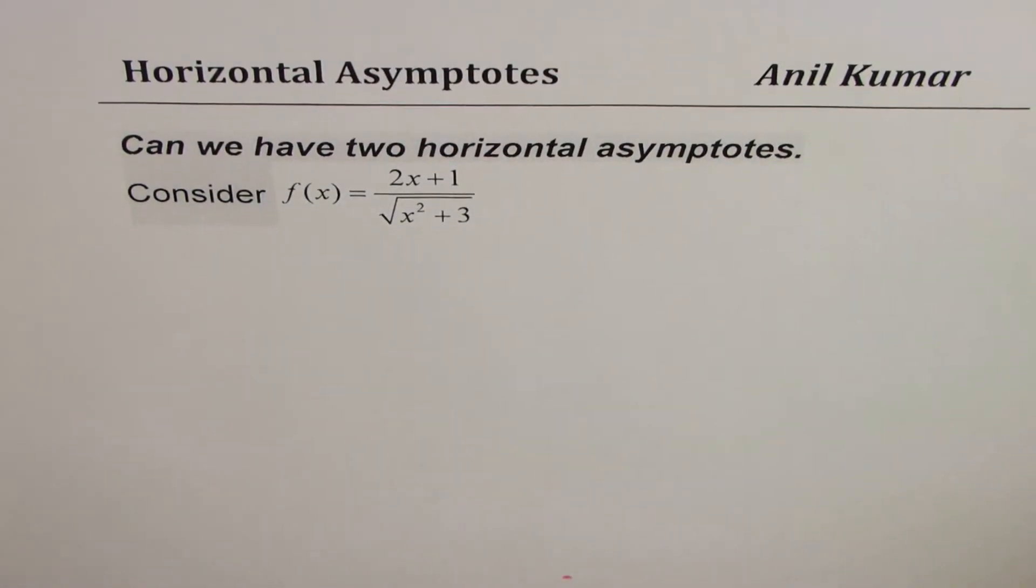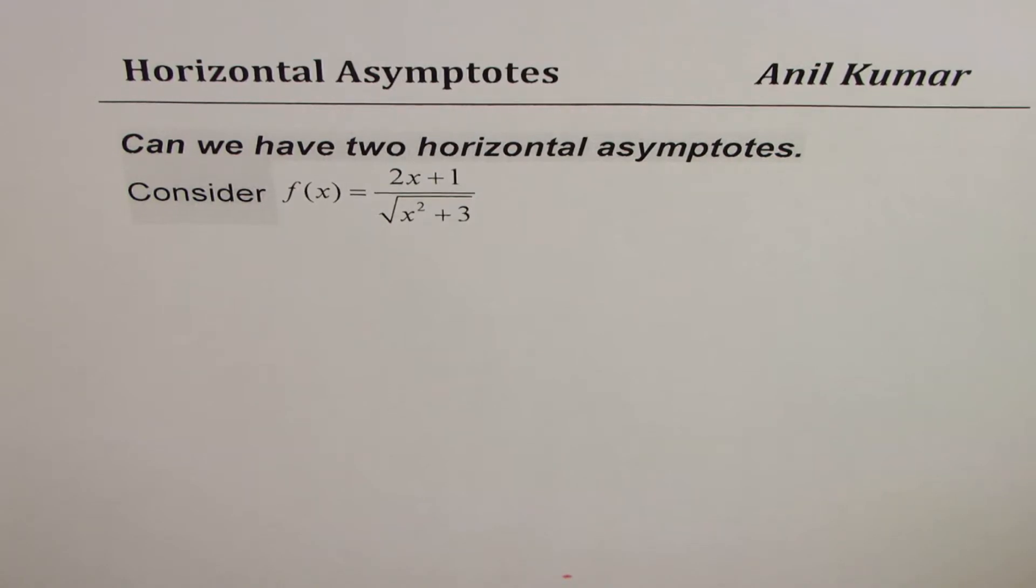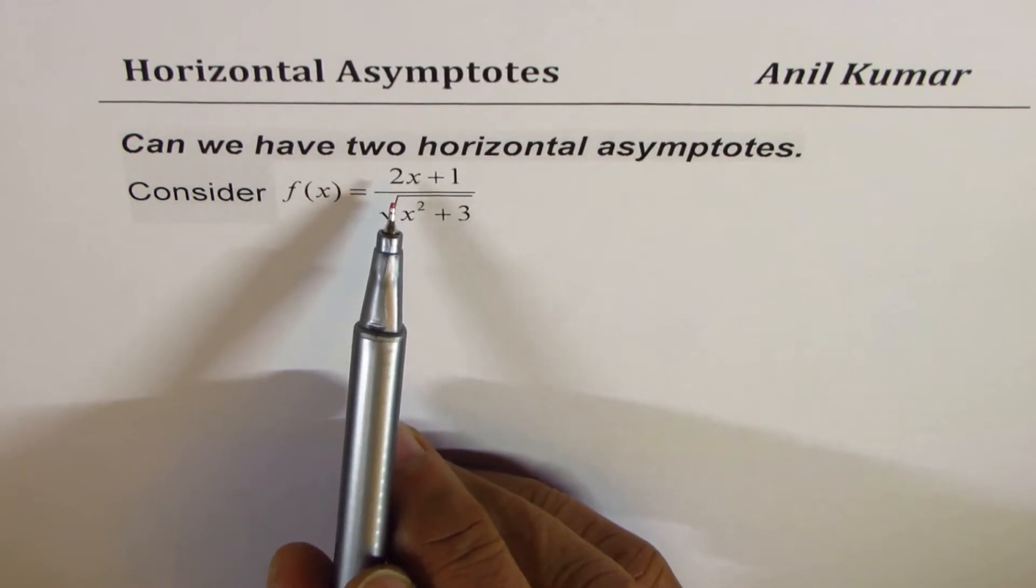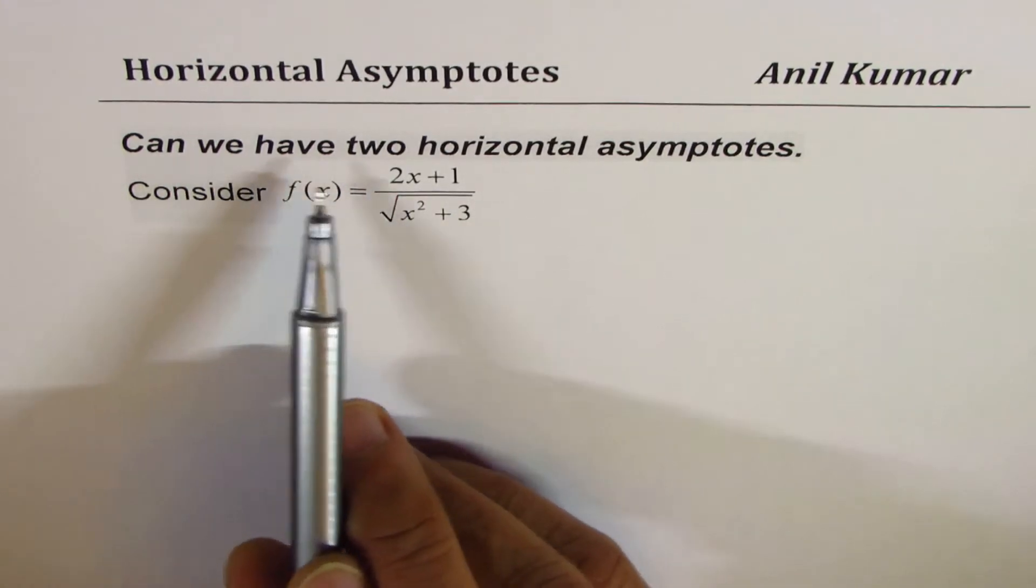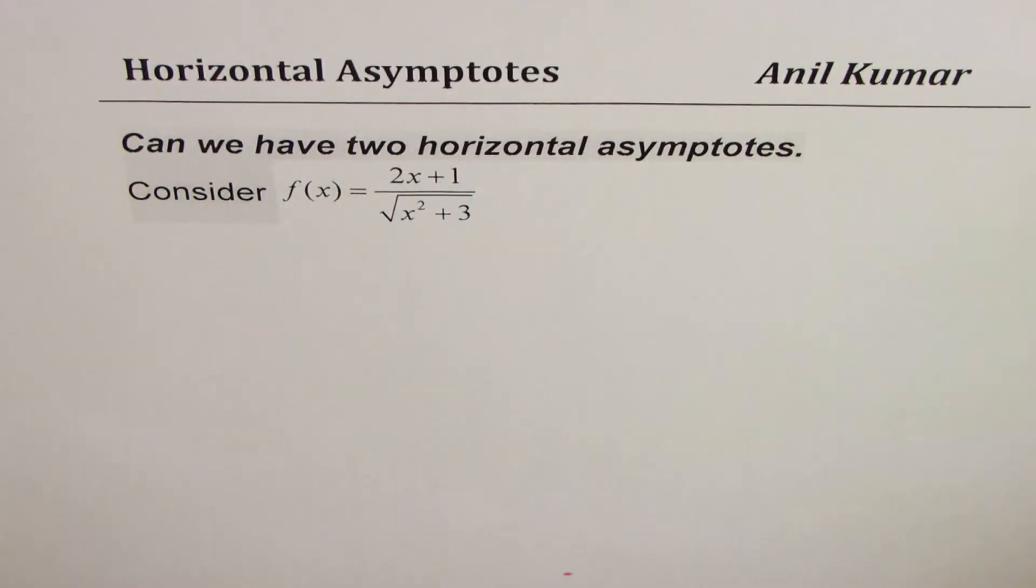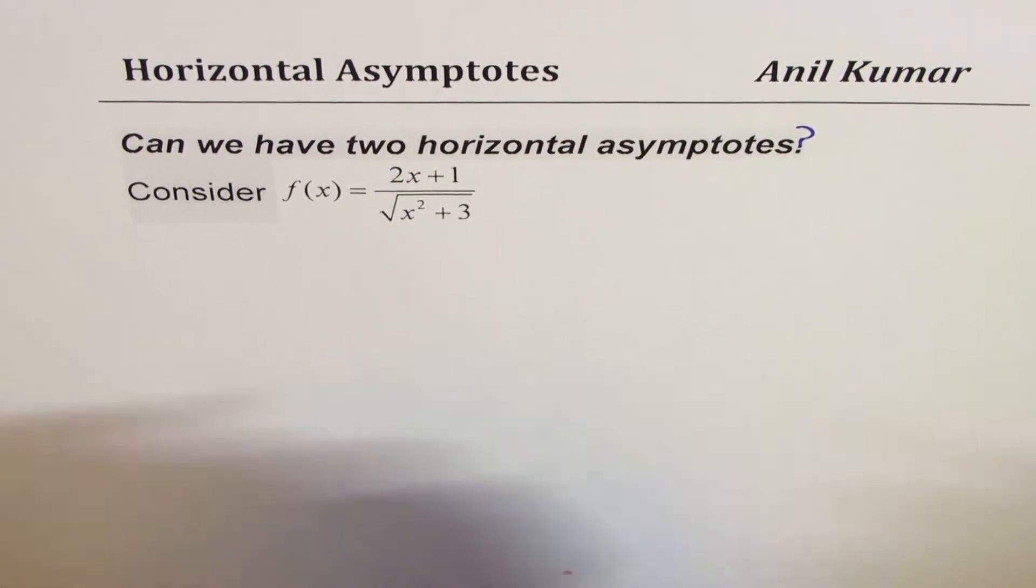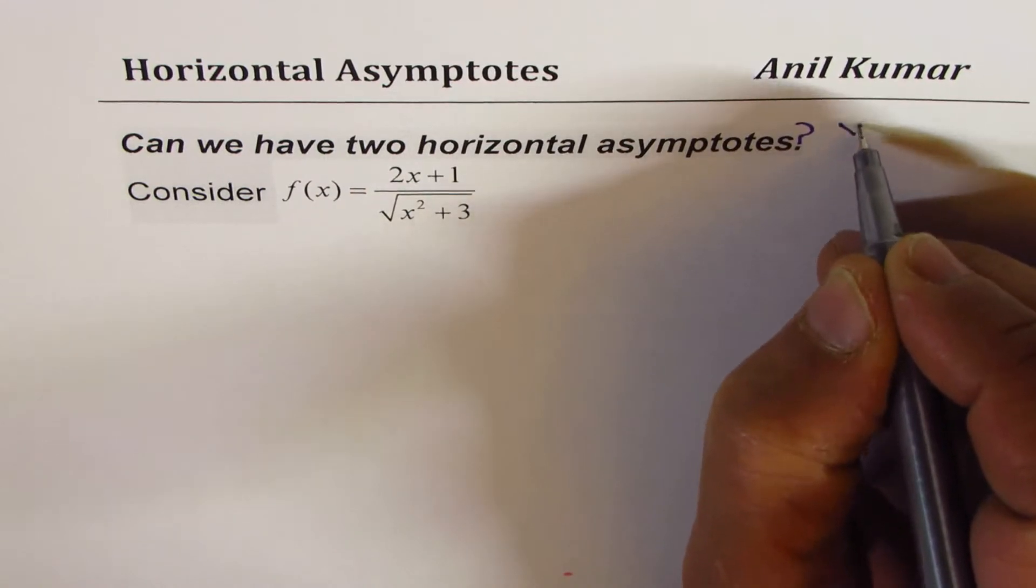I'm Anil Kumar. Let me first thank my subscriber Mike for an excellent question, and I hope the solution will help many others. I'll also answer a question asked by many students: can we have two horizontal asymptotes? The answer is yes, and you will see how with this example.